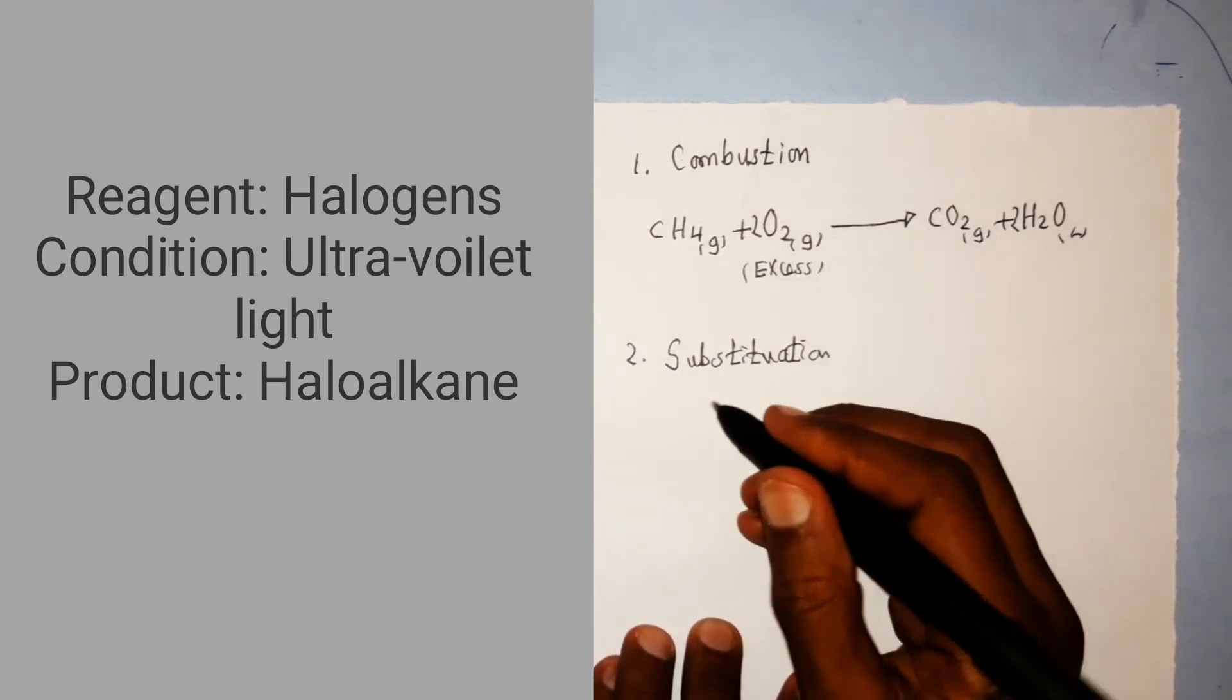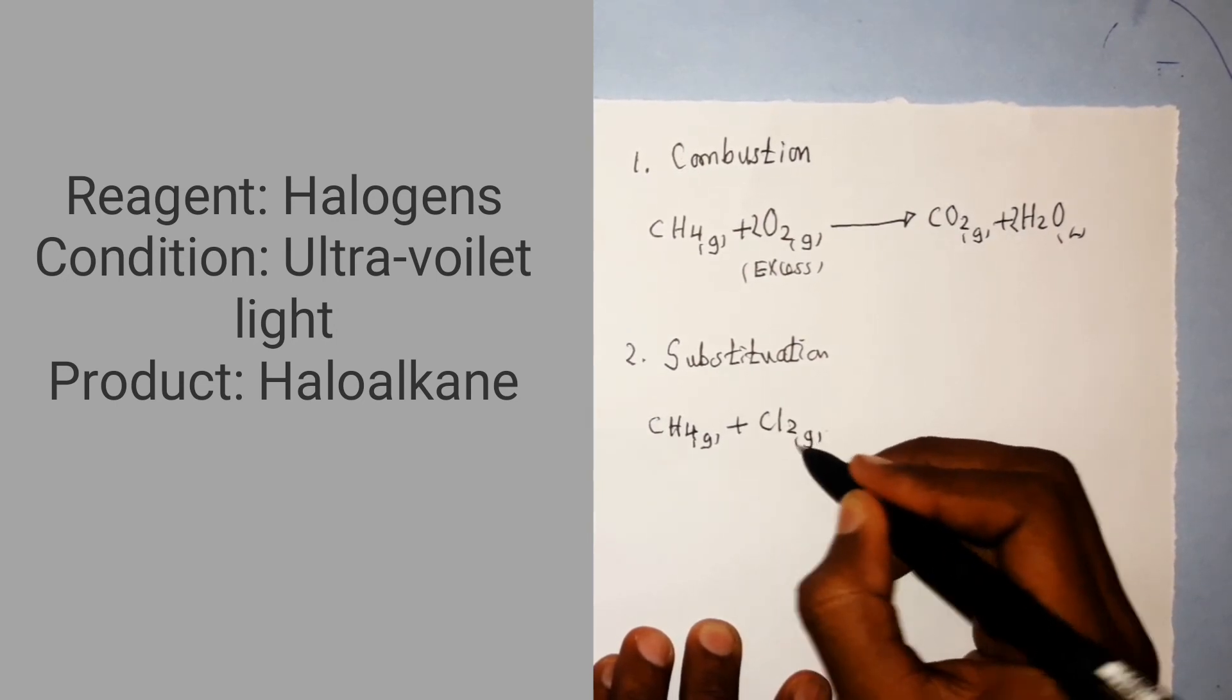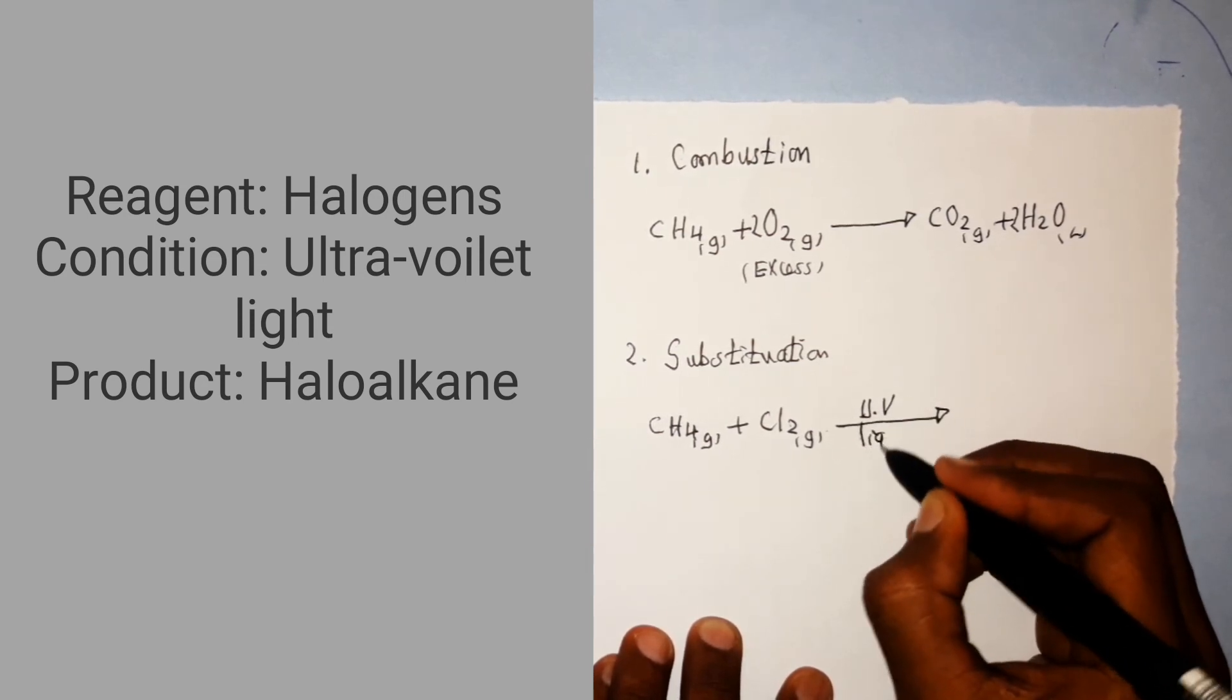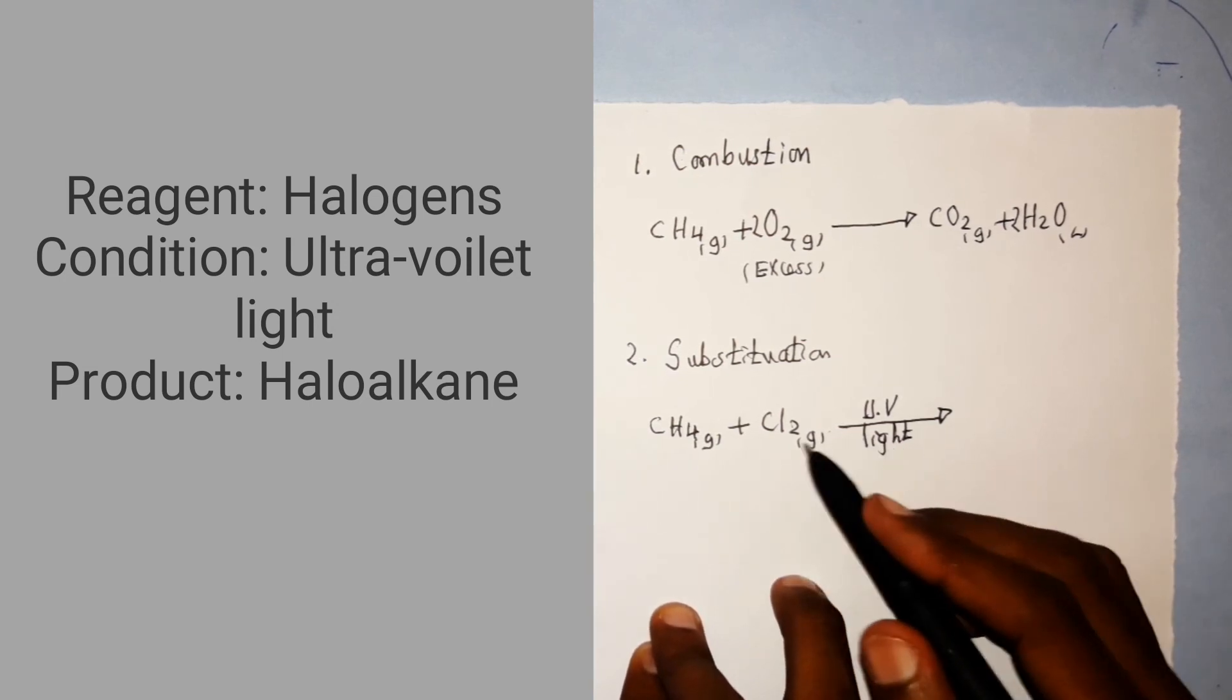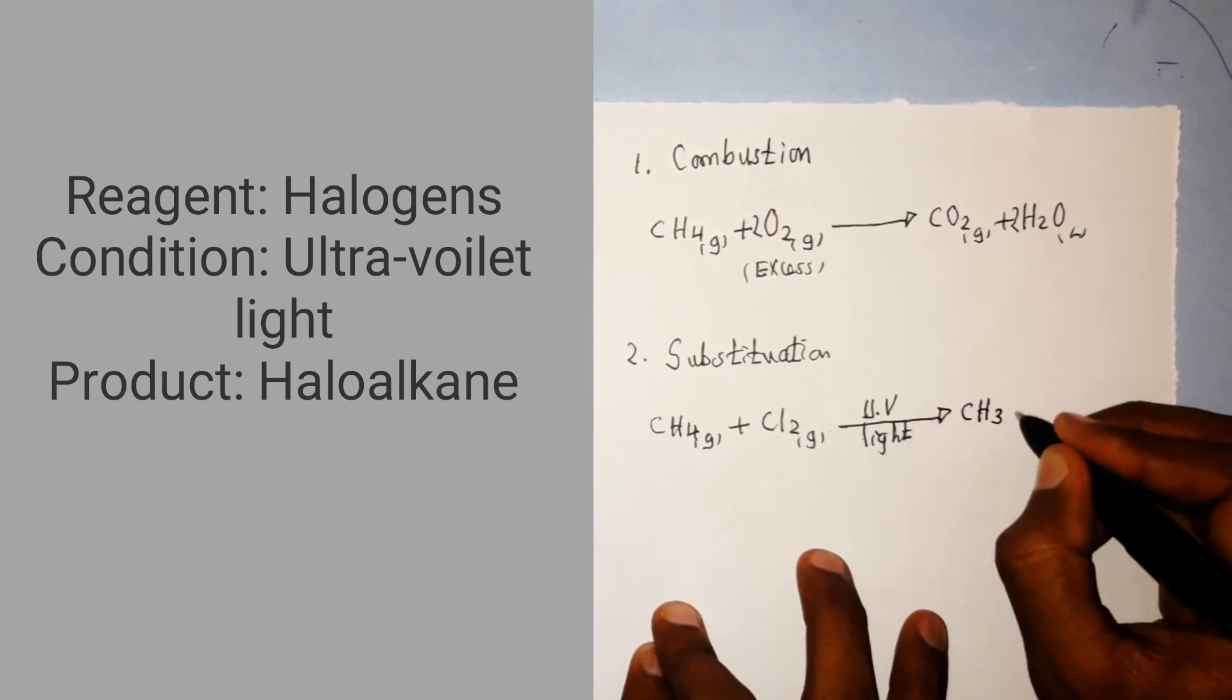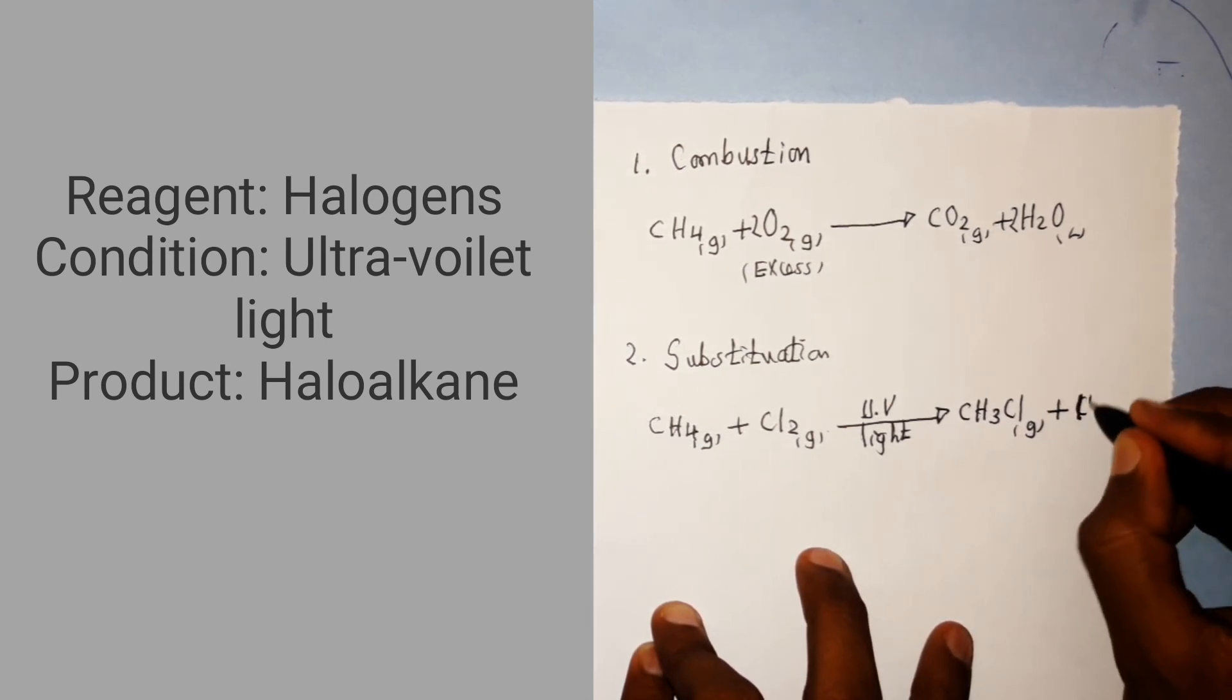A reaction of methane, that is CH4 gas, reacting with chlorine gas, that is a halogen, in the presence of UV light. The role of UV light is to energize or to split this chlorine molecule into free radicals of chlorine atoms. Here a substitution occurs, one chlorine will substitute one hydrogen. So here you will get CH3Cl gas. And then, the hydrogen that has been replaced or substituted reacts with the other chlorine, giving you HCl.